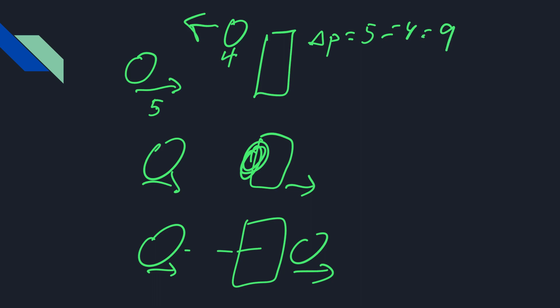So that's a change in momentum of nine kilogram meters per second. So remember, that means that change in momentum goes into this block. So this block would now have a change in momentum of nine. Momentum's got to be conserved, right?